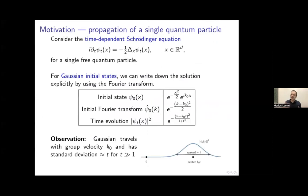This is going to be about propagation bounds in quantum mechanics. Let's focus on some simple model case for motivational purposes. I'll look at the time-dependent Schrödinger equation for the simplest case — a single free quantum particle. We just have the Laplacian, no potential, and we all know that this can be diagonalized by Fourier transform in the continuum. For Gaussian initial states, we can write down the solution exactly.